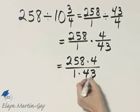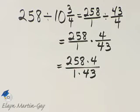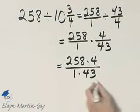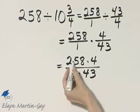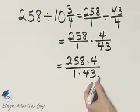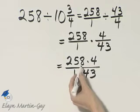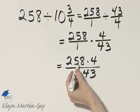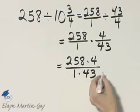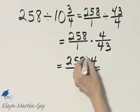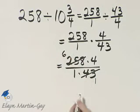I happen to notice that 43 and 258 actually have a common factor of 43 in them. You would find that out if you multiplied numerator and denominator and then divided, or if you wrote prime factorization of 258. Regardless, it goes into 258 six times.